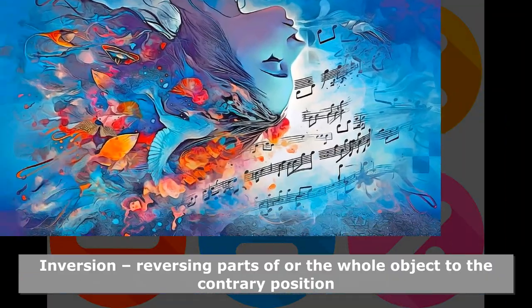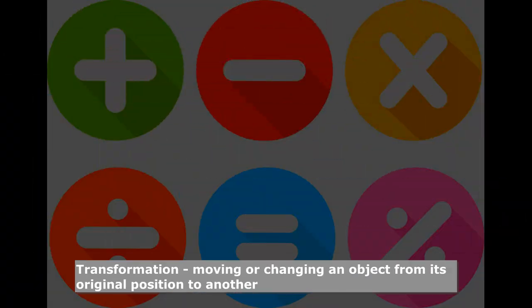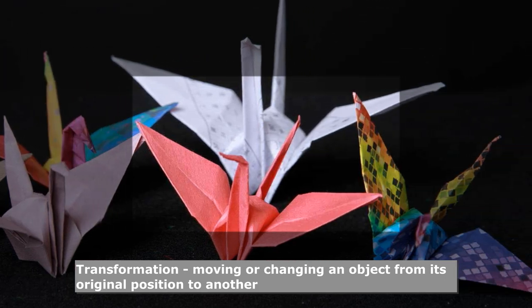Inversion is reversing parts of or the whole object to the contrary position. Transformation is moving or changing an object from its original position to another.